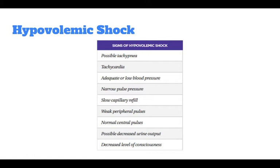Hypovolemic shock is the most common type of shock and perhaps the easiest to understand. Hypovolemic shock results from insufficient blood in the cardiovascular system. This can be due to hemorrhage externally or into the peritoneum or into the gastrointestinal system. Hypovolemic shock in children can also occur from water loss, perspiration, diarrhea, vomiting, or when fluid moves into the tissue.